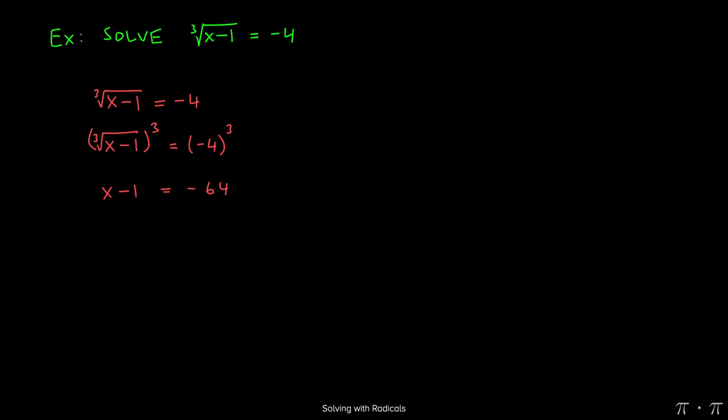This gives us a very nice simple linear equation which we can solve by simply moving the 1 to the other side and getting negative 64 plus 1, which gives us that x equals negative 63.